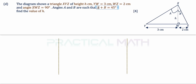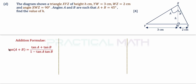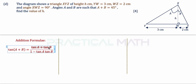We are told A + B = 45 degrees. Since tangent 45 is a special angle equal to 1, we use the tangent addition formula: tan(A + B) = (tan A + tan B) / (1 minus tan A · tan B). From the triangles, tangent A equals 3/H and tangent B equals 2/H.